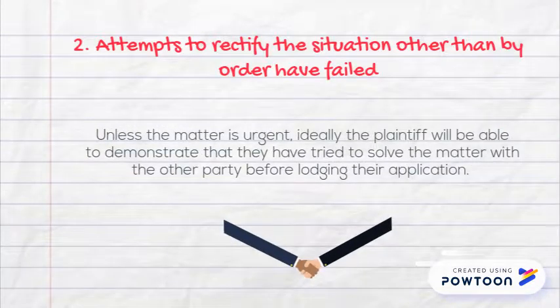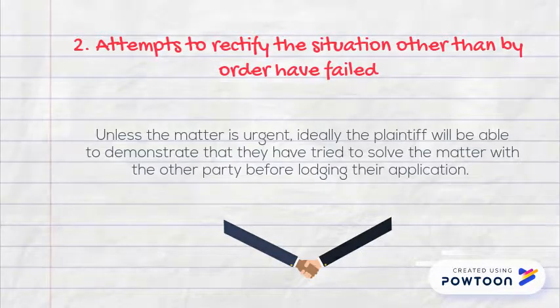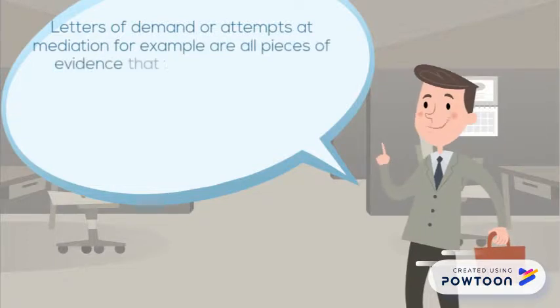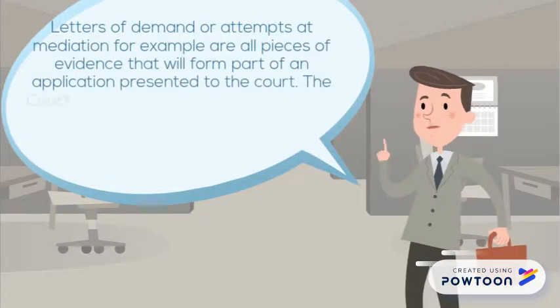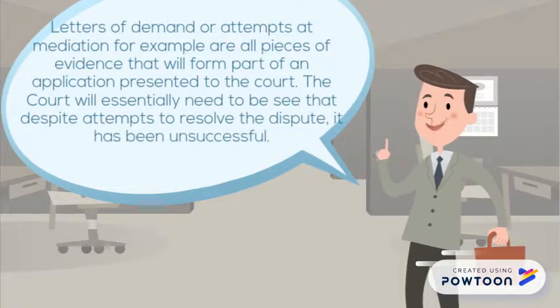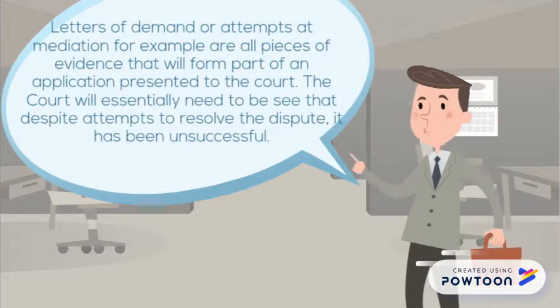Secondly, the plaintiff will need to show that attempts to rectify the situation other than by order have failed. Unless the matter is urgent, ideally the plaintiff will want to be able to demonstrate that they have tried to solve the matter with the other party before lodging their application. Letters of demand or attempts at mediation, for example, are all pieces of evidence that will form part of an application presented to the court. The court will essentially need to see that, despite attempts to resolve the dispute, it has been unsuccessful.